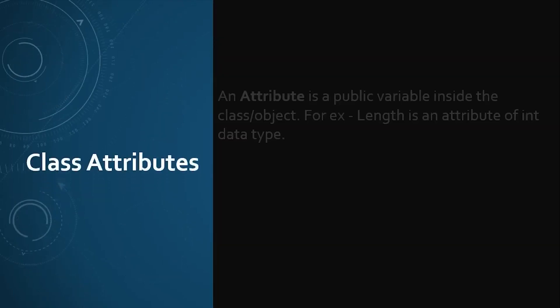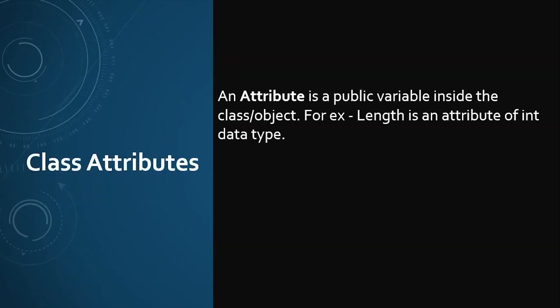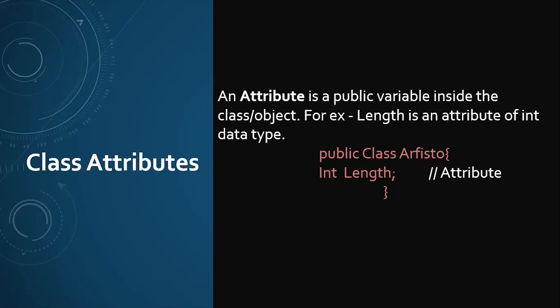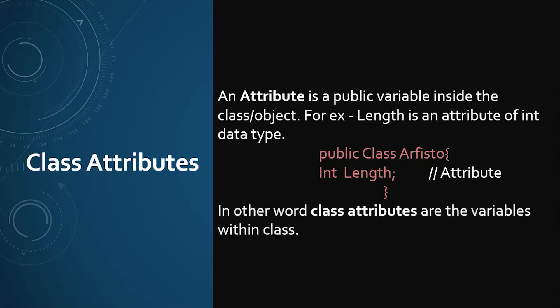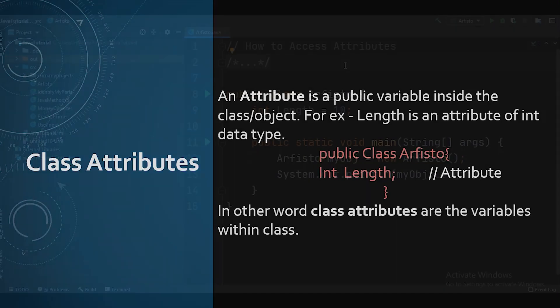So the first topic is class attributes. An attribute is a variable inside a class or object. For example, length is an attribute of an int data type. Here we have a mini program where we have taken an int data type with the variable name length — so this length is an attribute. In other words, class attributes are the variables within a class.